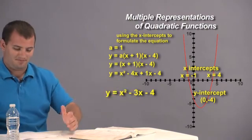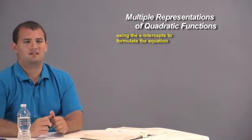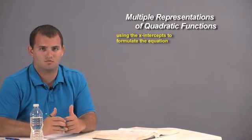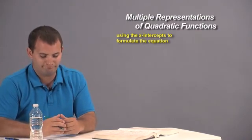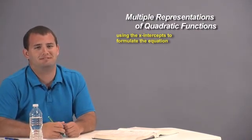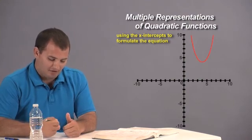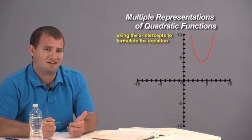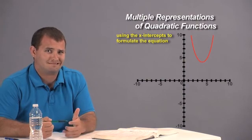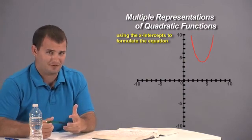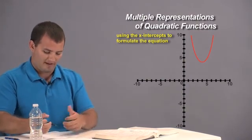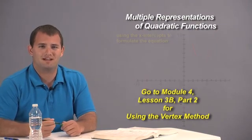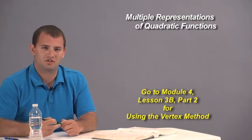Now we need to discuss the weakness of using the x-intercepts method when we have certain graphs. Look at this graph — it doesn't have any x-intercepts. Can we really use the x-intercept form when we have that problem? But we do have another way of doing it, and that's using the vertex method.